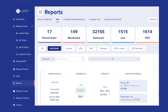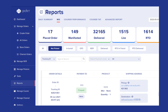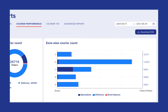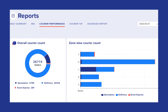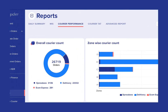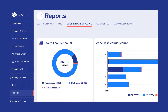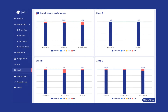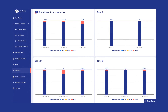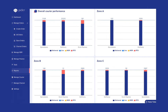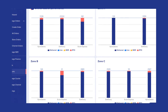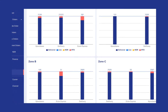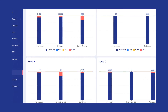For every order, you can either choose to cancel or track it. The next is the Courier Performance section, where your orders are divided according to the type of courier partners. It shows the penetration of each courier partner according to the delivery zones. You can select the date range as per requirement, and the Download CSV button will download the complete courier-wise report on your system.